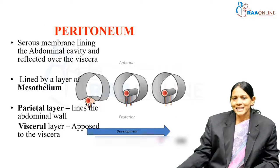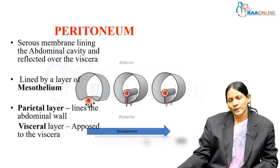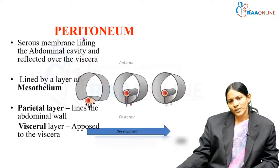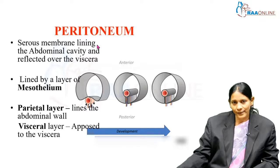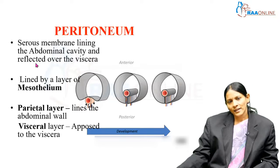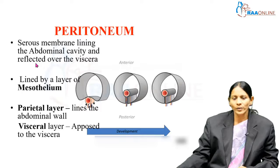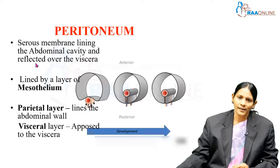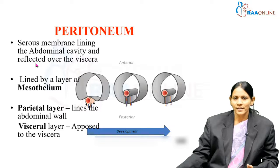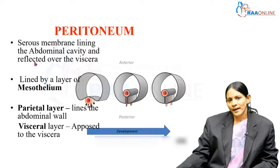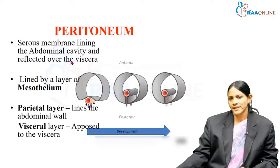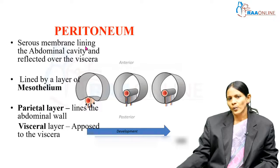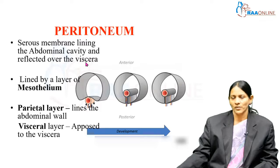What is peritoneum? It is a serous membrane which lines the abdominal cavity and is reflected over the viscera. I would like to emphasize on two terms: lining and reflected. Lining is something on the inner surface — like the lining of your suit, tops, or blouses. Reflected over the viscera means covering, which is something over the external surface. So this serous membrane lines the inner surface of the abdominal cavity but covers the outer surface of the viscera.